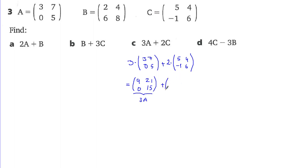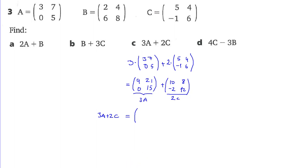Then plus 2 times C, where C is [5, 4; -1, 6]. Distributing: 2 times 5 is 10, 2 times 4 is 8, 2 times -1 is -2, 2 times 6 is 12. Now adding 3A plus 2C: 9 plus 10 equals 19, 21 plus 8 equals 29, 0 plus (-2) equals -2, and 15 plus 12 equals 27.